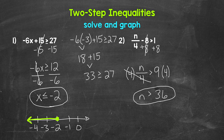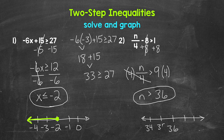n is greater than 36 and can be any value greater than 36. Now we can graph. We start with the number line, placing 36 with a couple of numbers on both sides: 34, 35, 36, 37, 38. We need an open circle at 36 to show it's not included. Then we need an arrow going right to represent all values greater than 36. And that's our graph.